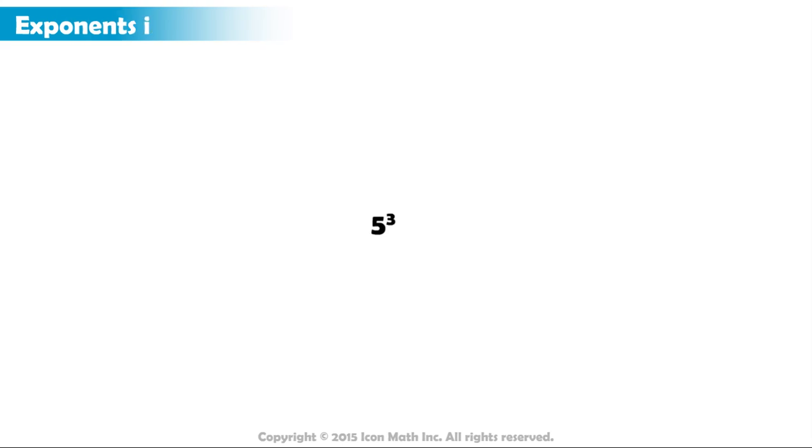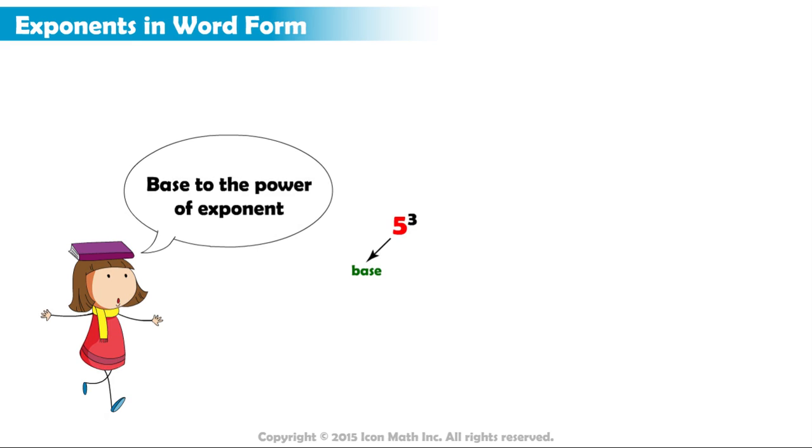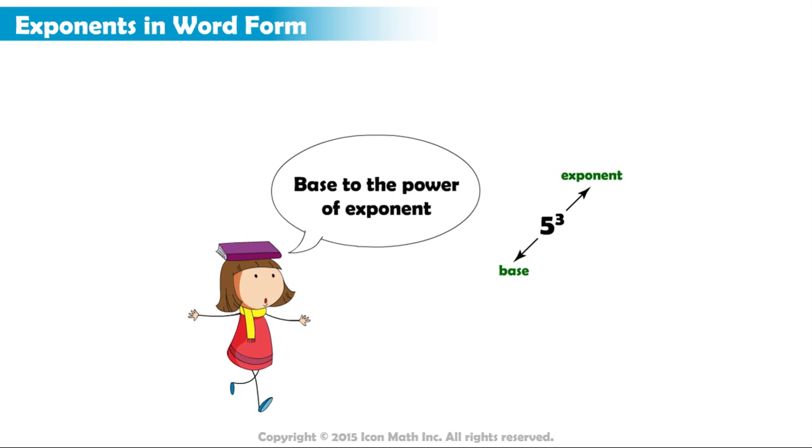When reading a number in exponential notation, we can say the base to the power of the exponent. For example, this number would be read as 5 to the power of 3.